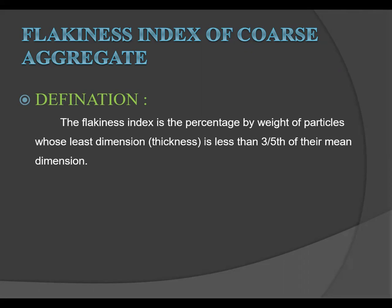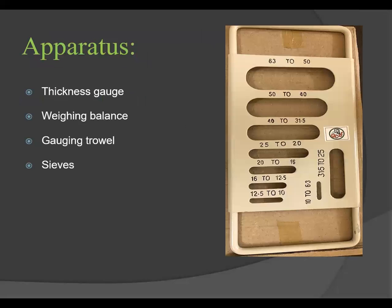Today's topic is the Flakiness Index of coarse aggregate. The Flakiness Index is the percentage by weight of particles whose least dimension — that is, the thickness — is less than three-fifths (0.6) of their mean dimension (D mean). The percentage by weight of particles whose thickness is less than 0.6 of their mean dimension is known as the Flakiness Index.